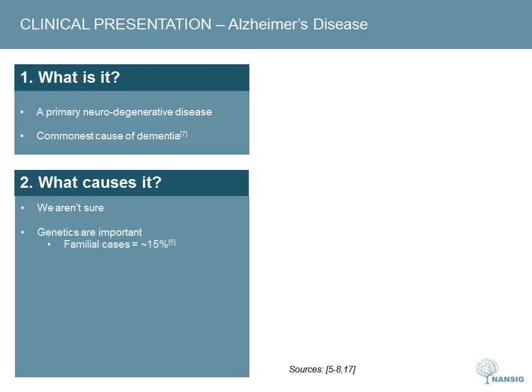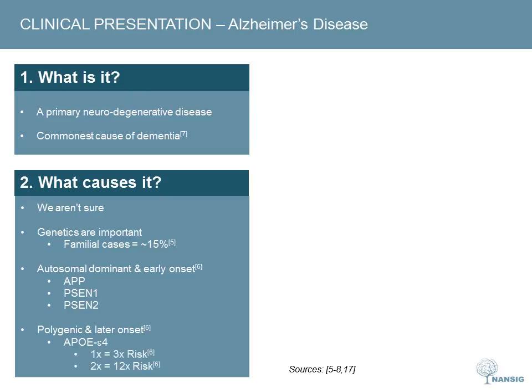There are two categories of familial Alzheimer's disease. First, autosomal dominant early onset disease, associated with mutations in the genes APP, PSEN1, and PSEN2 — all linked to beta amyloid. Second, polygenic later onset disease, where the gene APOE4 has the most significant genetic association. One allele of APOE4 increases risk by three times, while two alleles increases it by 12 times.